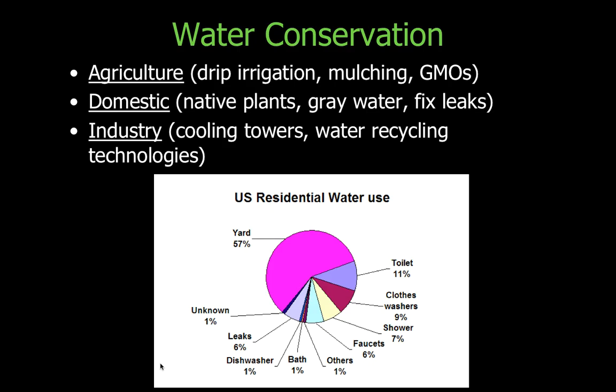So how can we conserve water? In agriculture we can use drip irrigation, we can mulch because mulch soaks up water and holds it well for plants, or we can use GMOs to create drought-resistant crops.